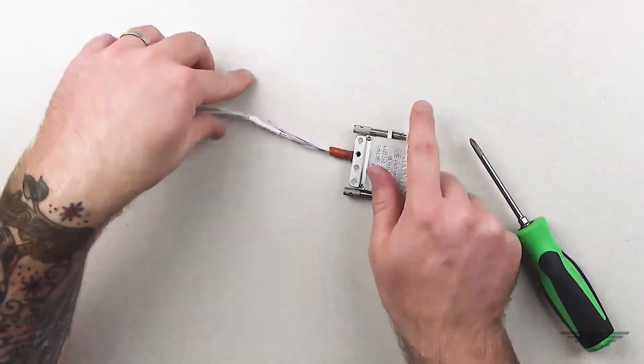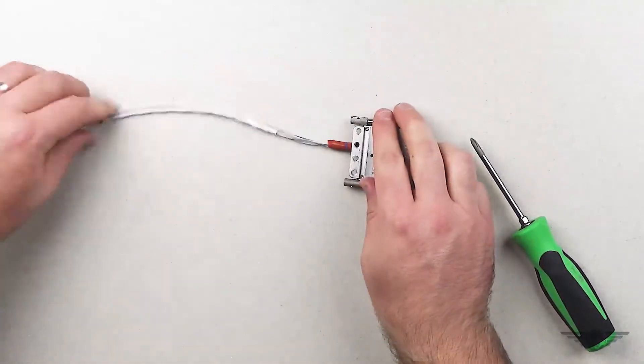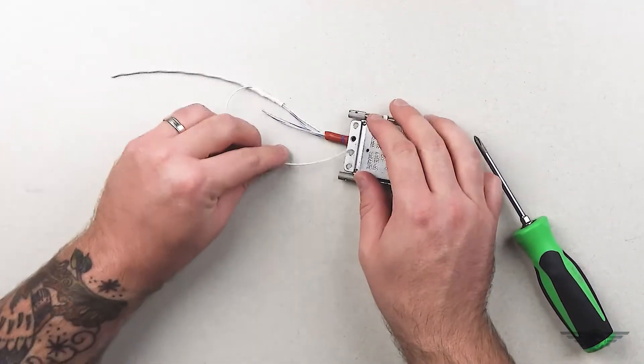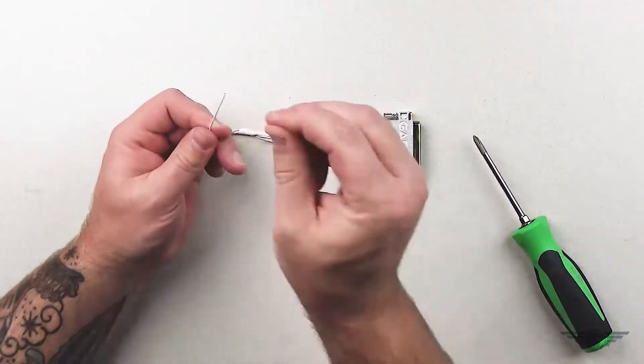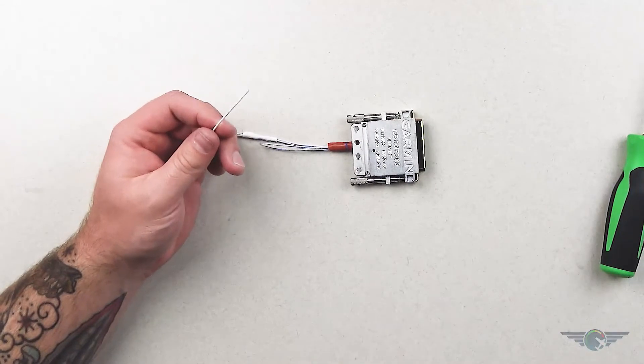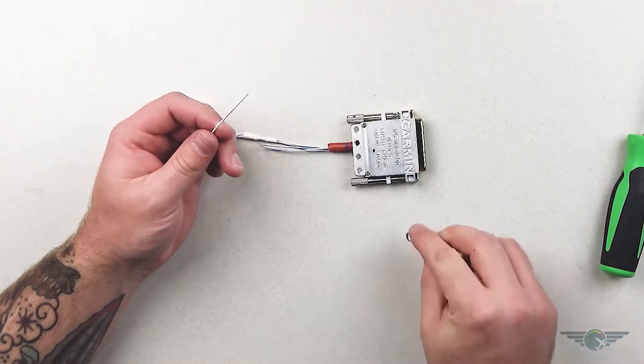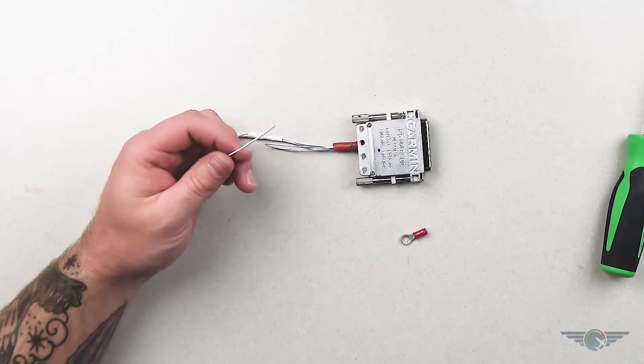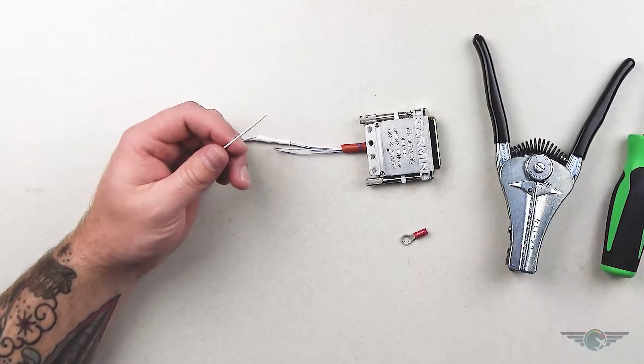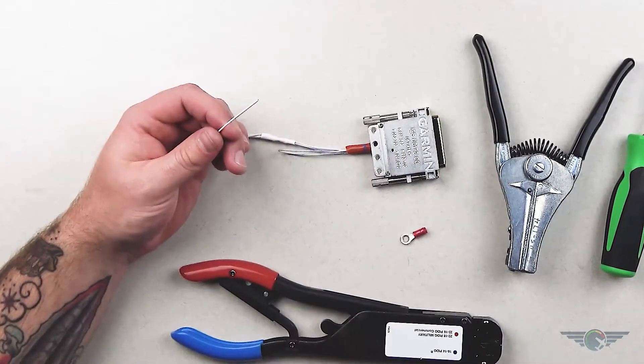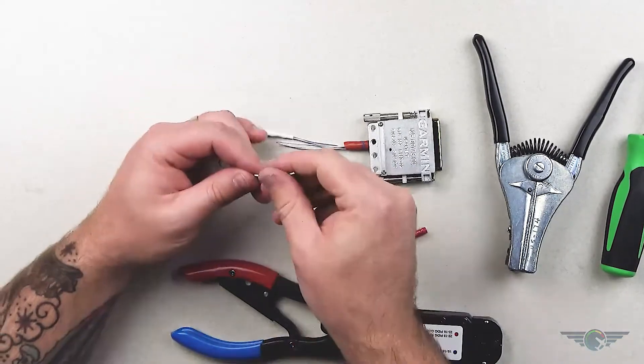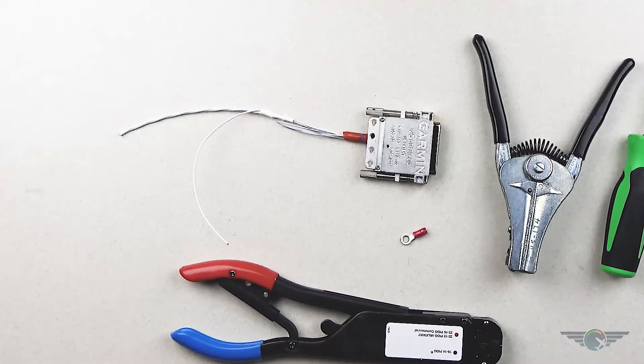And that is a completed connector. The only thing we have left is to terminate our shield drain to the back shell. So now we need to do that, and how we're going to go about that is I'm going to use a D-ring. I'm going to need my wire strippers, and then I have a ring terminal crimper, so that's how we will terminate that. And then lastly, you will need an 832 screw.